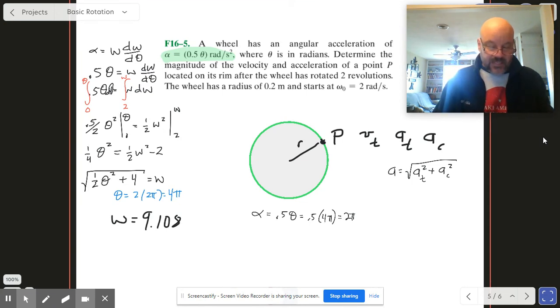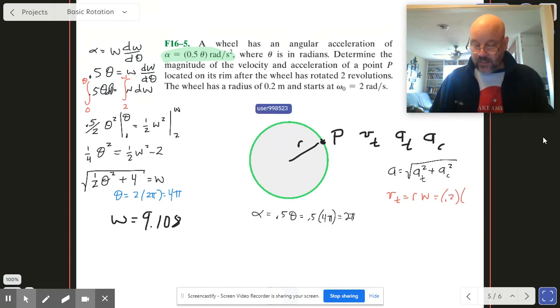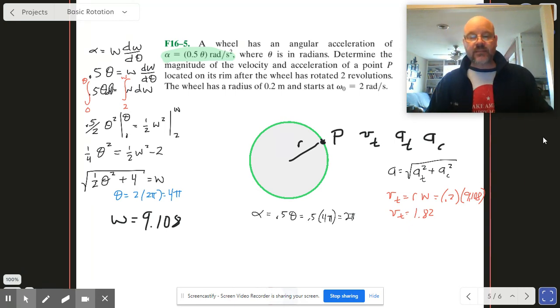So to get my actual Vt value, Vt is just R times omega. And so I can take 0.2 times that. So I get 0.2 times my 9.108. And my Vt is going to be 1.82. Okay. And I'm just going to leave it as 3 sigs because then that's what we would put into mastering like that.